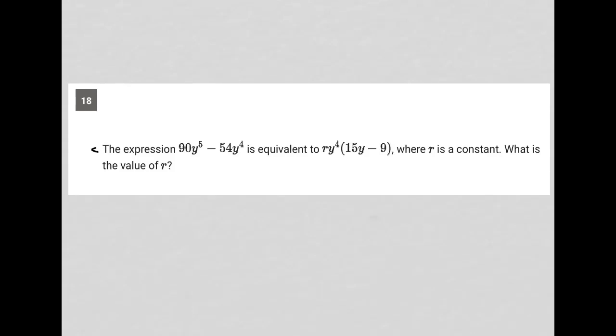So this question says the expression 90y to the 5th power minus 54y to the 4th power is equivalent to ry to the 4th power times 15y minus 9, where r is a constant. What is the value of r?